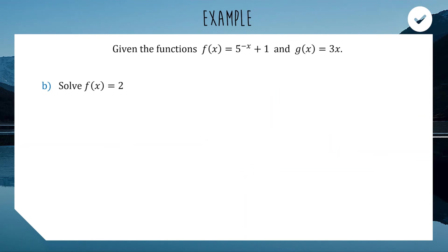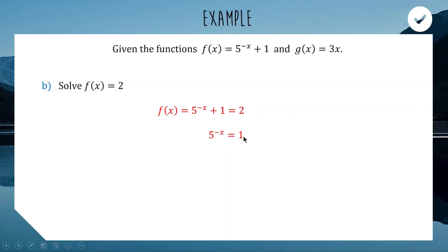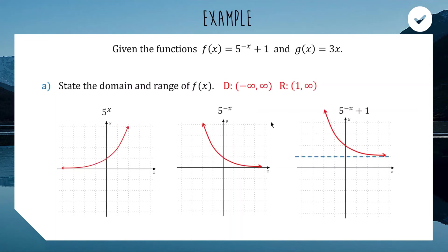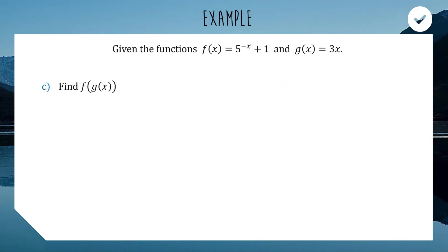For the next part, we solve f of x equals 2 — finding where the equation equals 2. Subtract 1 from both sides to get 5 to the minus x equals 1. Now think: 5 to the power of what gives 1? The answer is 0 — 5 to the power of 0 is 1. So negative x equals 0, meaning x equals 0. When x is 0, y equals 2, which we can also confirm from the graph.